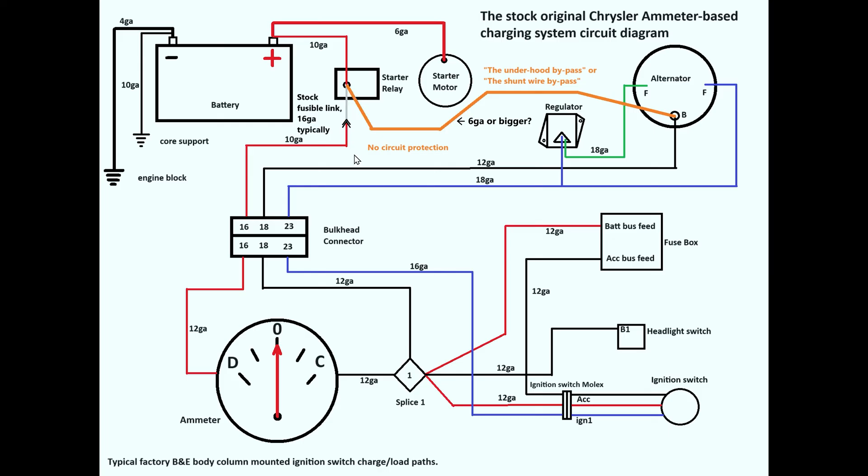That fusible link is there to protect all of this wiring that is unfused at 12 gauge typically. That supplies power to the fuse box, the headlight switch, the ignition switch. All of this wiring is unfused, nothing is protecting it except the fusible link. 12 gauge wire typically used originally.